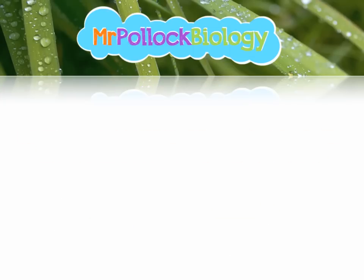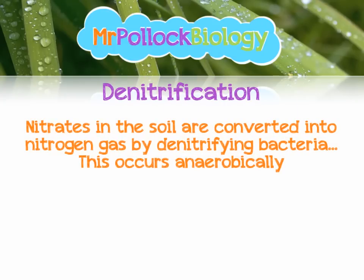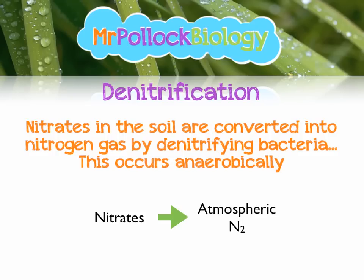The final stage is denitrification, and this is nice and straightforward. This is an anaerobic step where nitrates (NO3 minus) in the soil are converted into nitrogen gas by denitrifying bacteria. So nitrates (NO3 minus) get converted quite nicely back to atmospheric nitrogen.